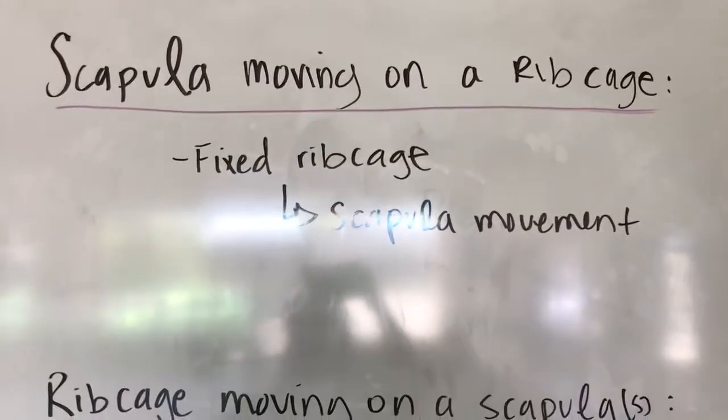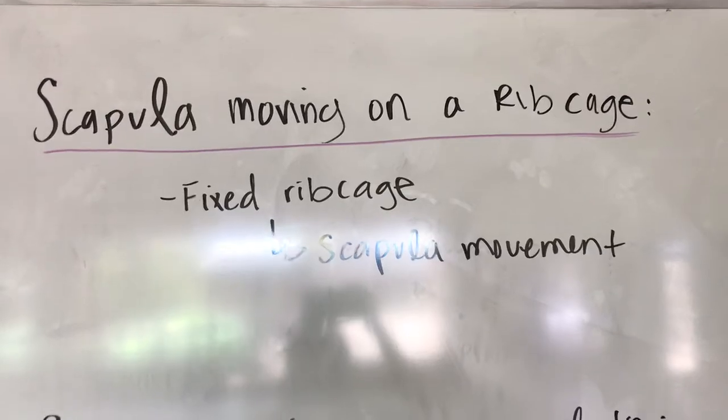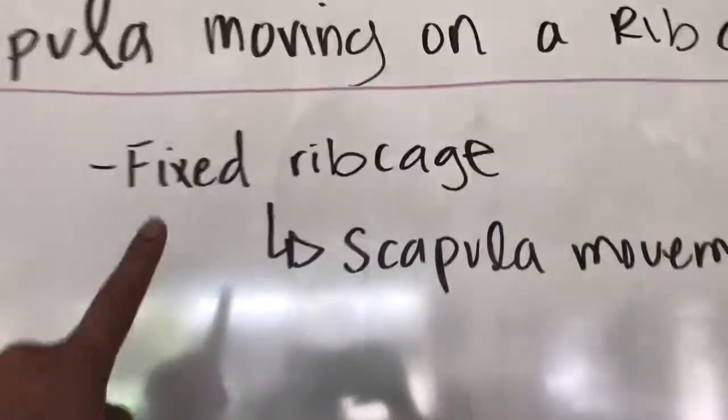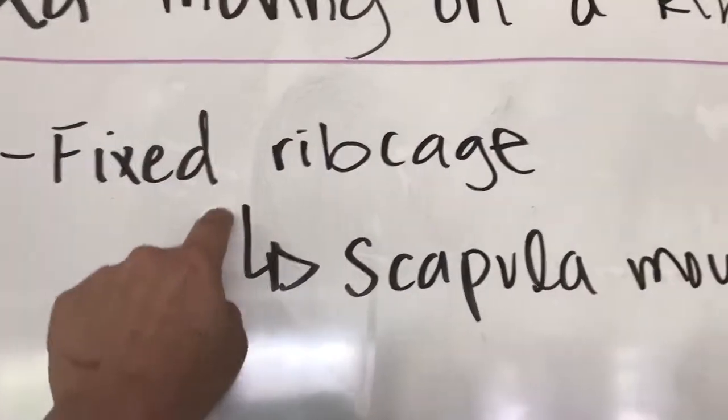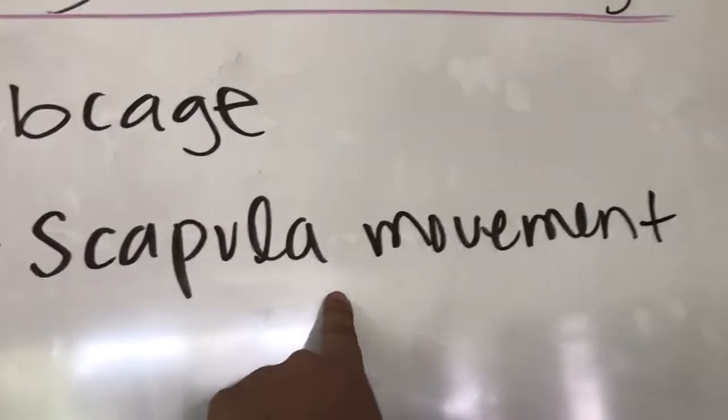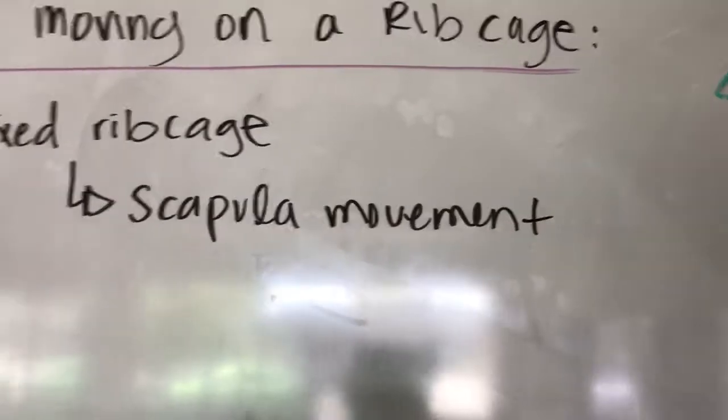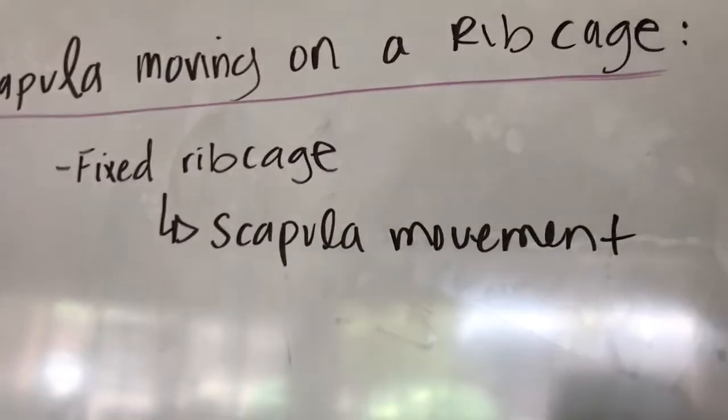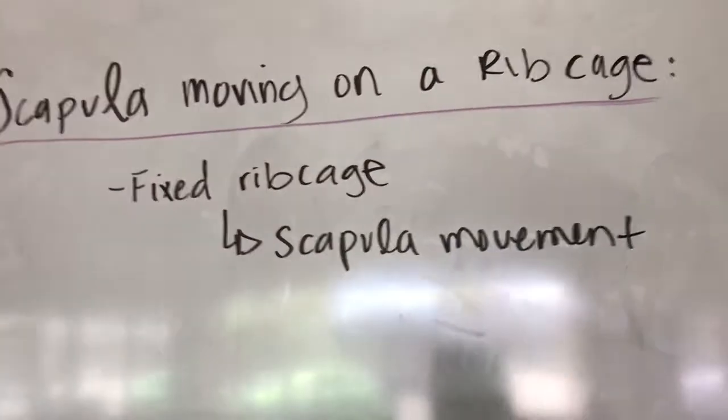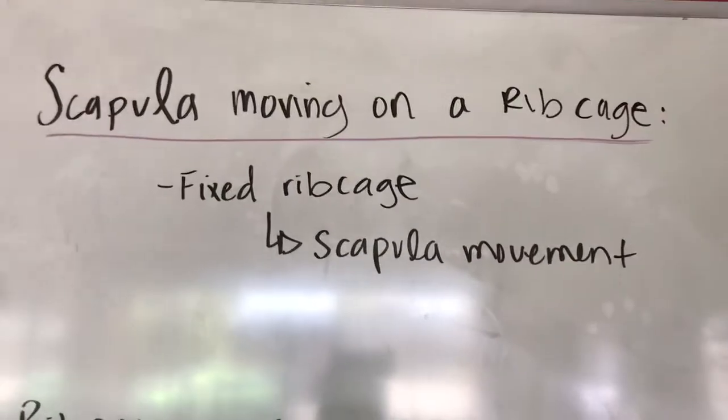We've got the one that everybody knows, and it's a scapula moving on a ribcage. That means the ribcage is fixed, the ribcage does not move, and then the scapula moves around the ribcage. That's shoulder blade retraction, shoulder blade protraction, upward rotation, downward rotation, all the motions that you use to train the scapula.